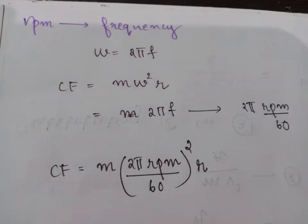We substitute omega equals 2 pi f in centrifugal force. In place of omega squared, we substitute 2 pi f squared, where f we write as RPM by 60. So centrifugal force equals m into 2 pi RPM divided by 60 whole squared into r.